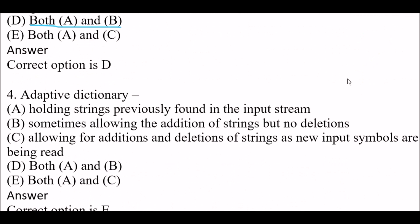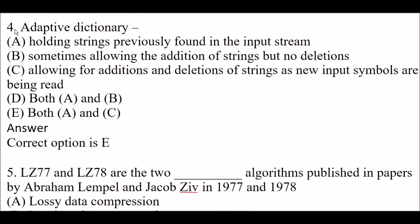Next question about the adaptive dictionary: Option A: Holding a string previously found in the input stream. Option B: Sometimes allowing the addition of strings but no deletions. Option C: Allowing for additions and deletions of strings as new input symbols are being read. Option D: Both A and B. Option E: Both A and C. The right answer is Option E — both A and C.